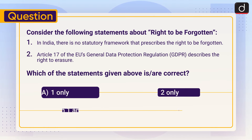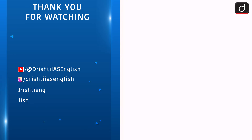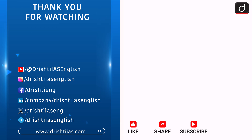Practice question: Consider the following statements about the right to be forgotten. One: In India, there is no statutory framework that prescribes the right to be forgotten. Two: Article 17 of the EU's General Data Protection Regulation describes the right to erasure. Which of the statements is or are correct? (a) One only, (b) Two only, (c) Both one and two, or (d) Neither one nor two. Send your answer in the comment section. Stay tuned for the next episode, and don't forget to like, share, subscribe, and press the bell icon.